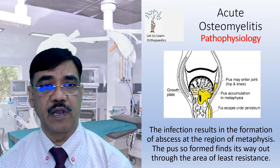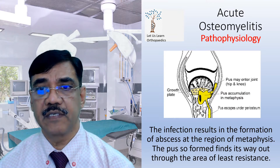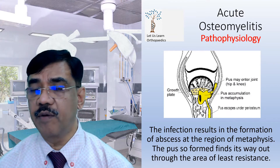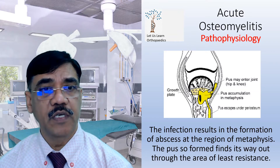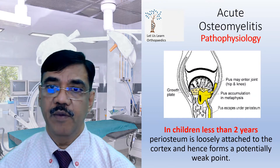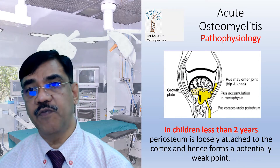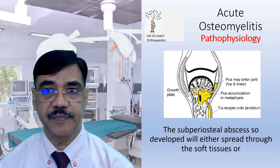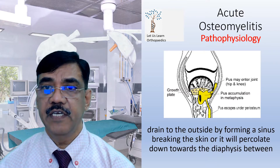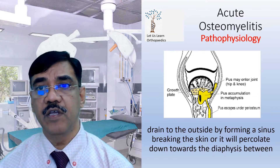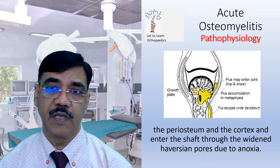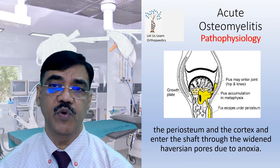Looking at the pathophysiology: the infection results in the formation of an abscess (shown in yellow in this diagram) at the region of the metaphysis. The pus so formed finds its way out through the area of least resistance. In children less than two years, the periosteum is loosely attached to the cortex and hence forms a potentially weak point. The subperiosteal abscess will either spread through soft tissues, drain to the outside by forming a sinus, or perforate towards the diaphysis between the periosteum and the cortex, entering the shaft through widened Haversian pores due to anoxia.